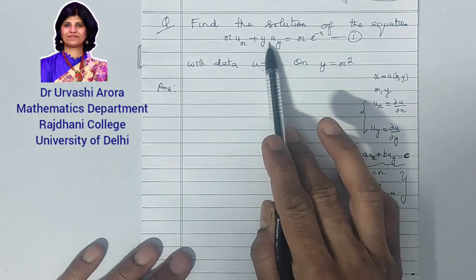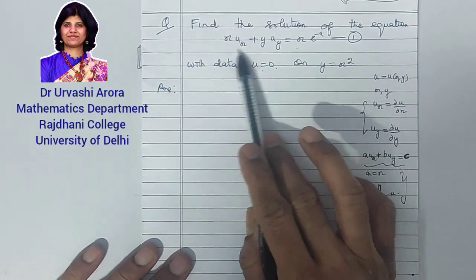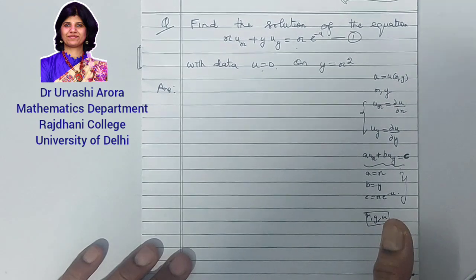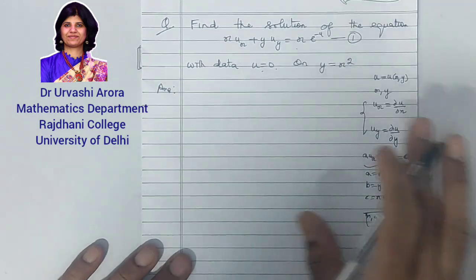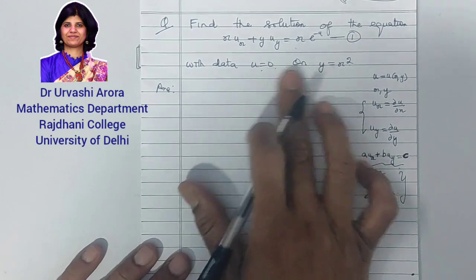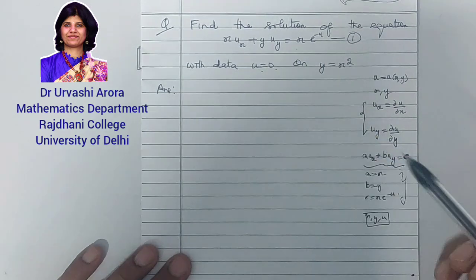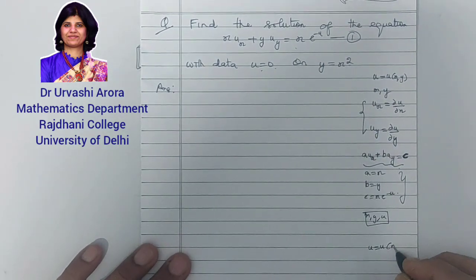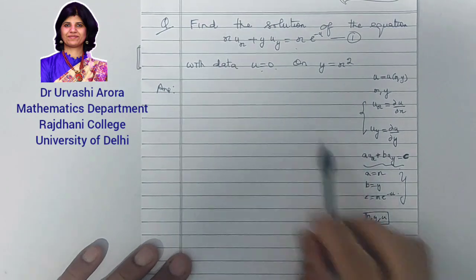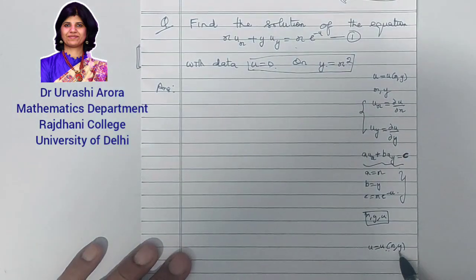We already know a method for solving it. Quasi-linear partial differential equations of first order can be solved by Lagrange's method, also called the method of characteristics. In this video, I am going to solve this quasi-linear first order PDE subject to these conditions — finding the solution u = u(x, y) that is not only a solution of equation 1 but also satisfies the given condition.